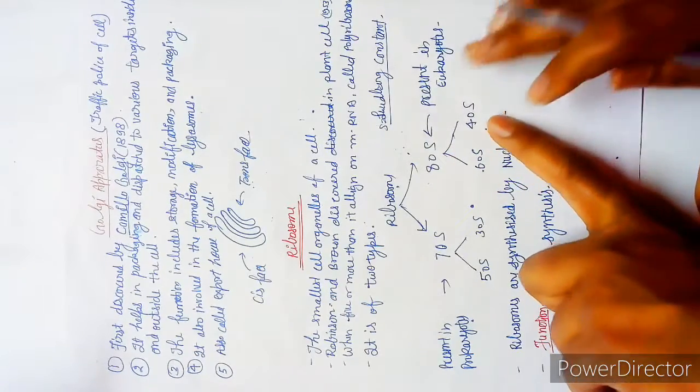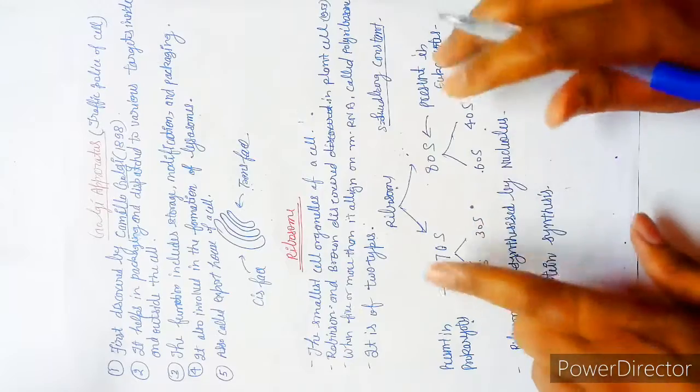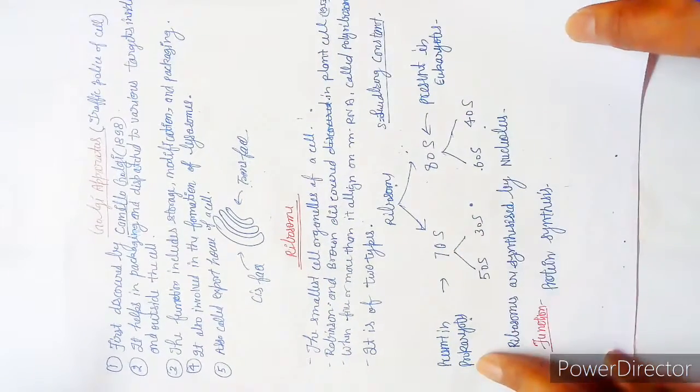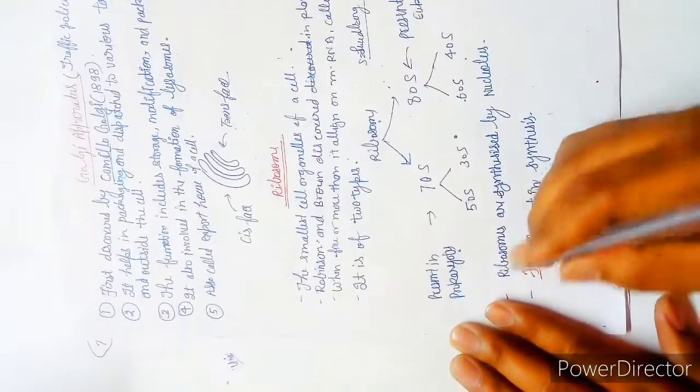70S is divided into subunits 50S and 30S, and 80S is divided into subunits 60S and 40S. 80S is present in eukaryotes.